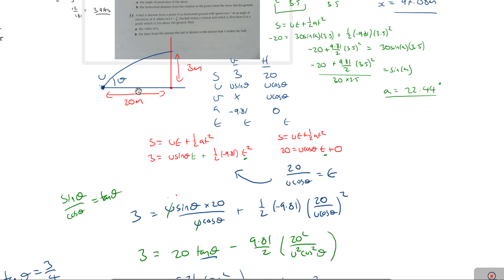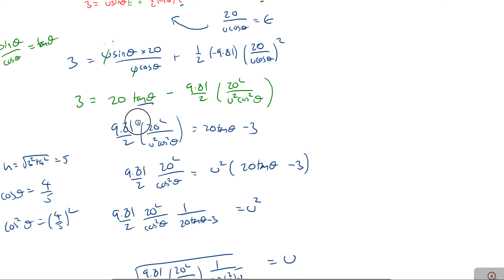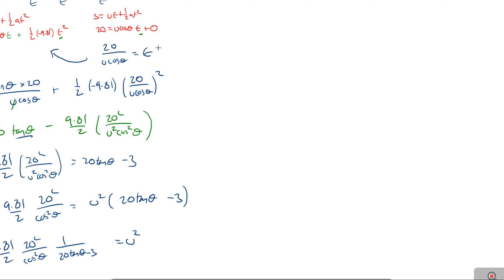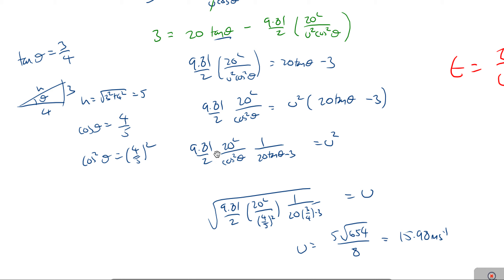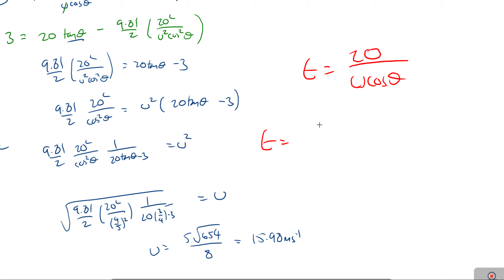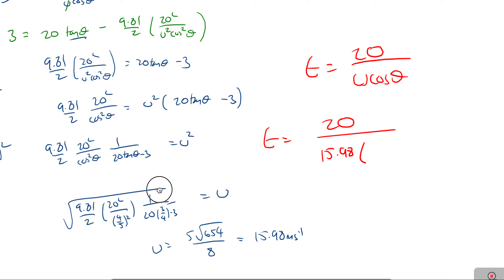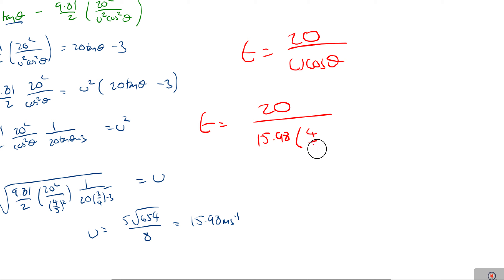Now finding the time using t = 20/(U cos θ): t = 20 / (15.98 × 4/5) = 20/12.784 ≈ 1.56 seconds. That is the end of these questions. If you have any further questions, please let me know — thank you.